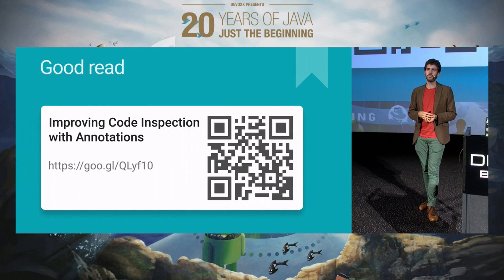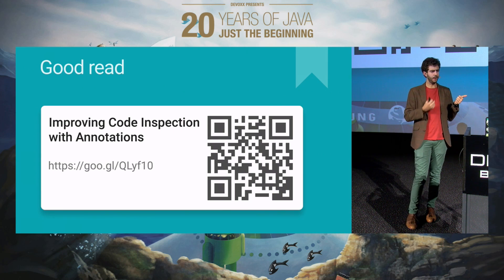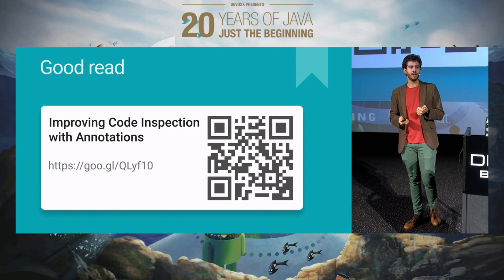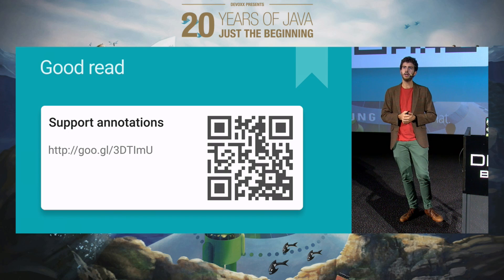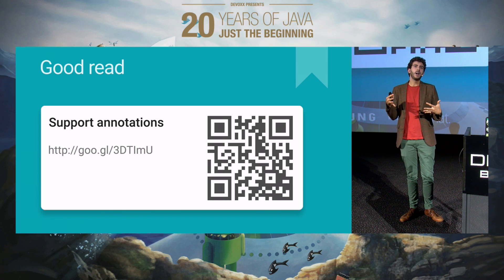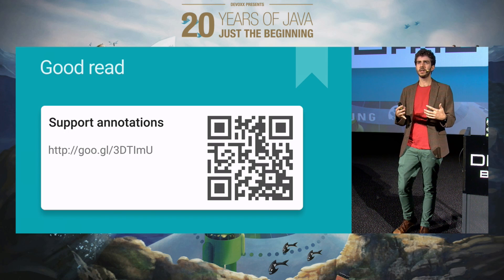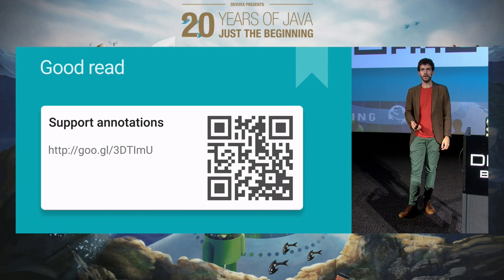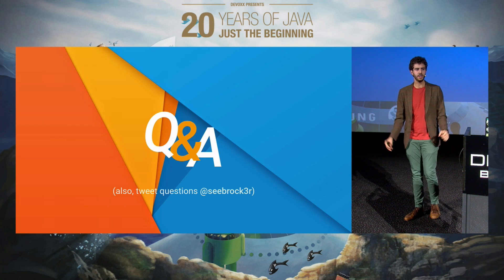If you want more information about the support annotations, there are two places you can look. One is on the Android Developers website, and the other is on the tools website. The tools website and the Android Developers web pages kind of have the same content but not really — there are still a few dots that need to be linked together, so you might want to read both. And that was it for the session.